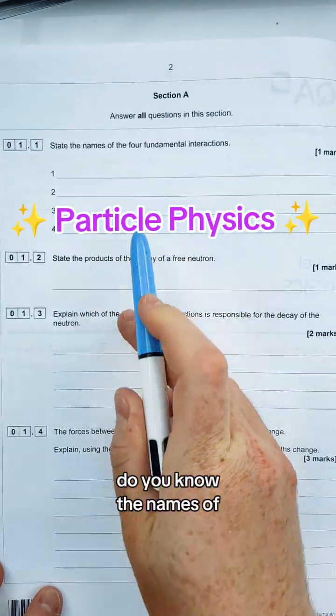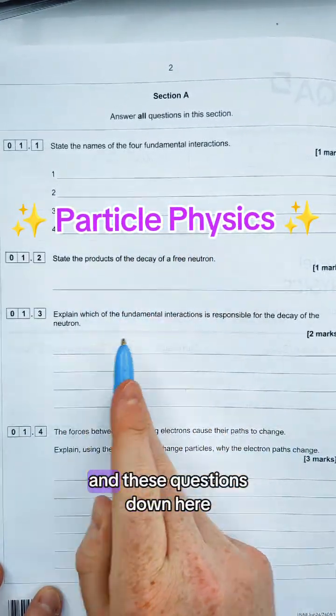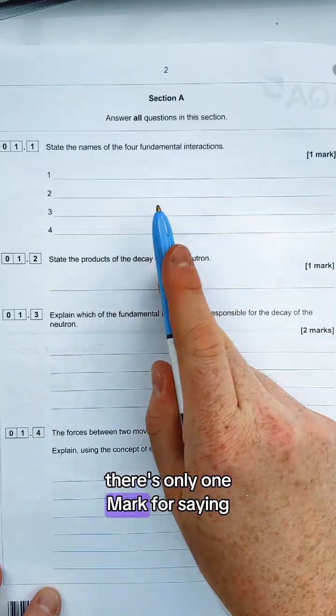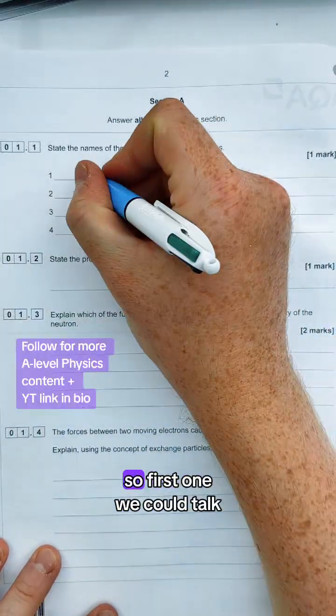Particle physics at A-level. Do you know the names of the four fundamental interactions and these questions down here? There's only one mark for saying four things, let's get that out of the way first. So the first one...